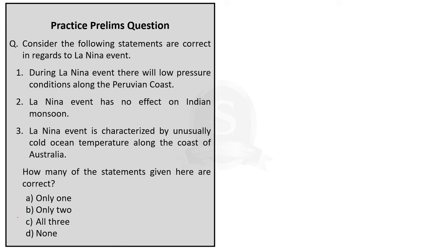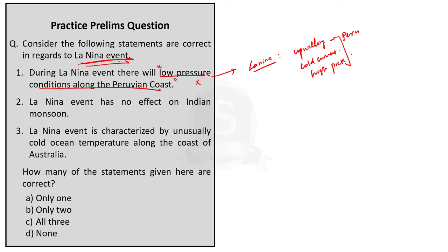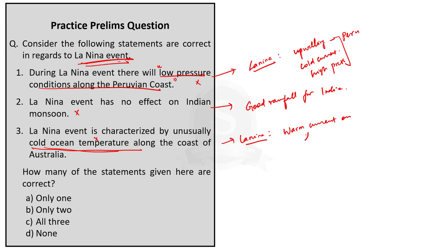Question 3: Consider the following statements in regard to the La Niña event. Statement 1: during La Niña event, there will be low pressure conditions along the Peruvian coast — this is incorrect, because during La Niña there will be amplified upwelling along the Peruvian coast, making the Peru current colder than normal, and due to the cold current the air starts sinking, producing high pressure conditions. Statement 2: La Niña event has no effect on the Indian monsoon — this is also wrong, because India will receive more rainfall during La Niña years, so it definitely impacts India's monsoon. Statement 3: it is characterized by unusually cold temperature along the coast of Australia — this is also incorrect, because La Niña is characterized by usually warm current along the Australian coast. So all three statements are incorrect, and the correct option is D.